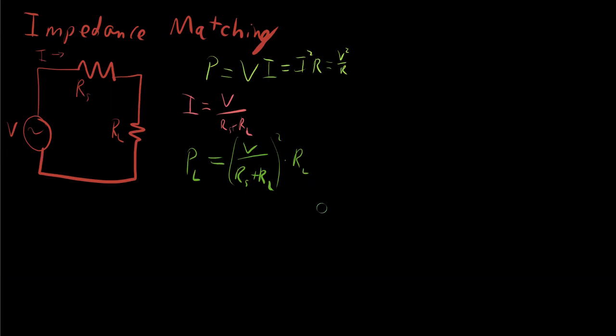And so now we have an equation that effectively, we simply have to maximize. And that's not too bad. So let's just distribute this out for a moment and see what we get. We get V squared over RS squared plus 2 RS RL plus RL squared. I'm just factoring that through. All of this though is going to get multiplied by RL.